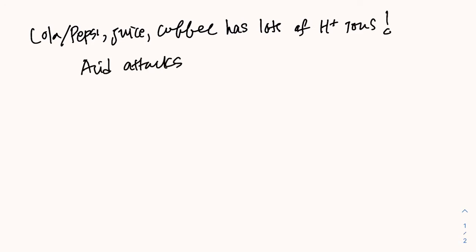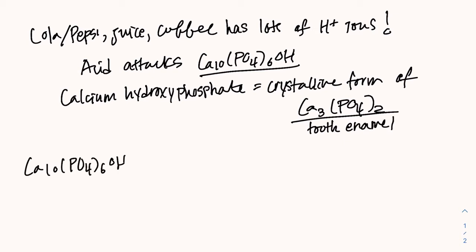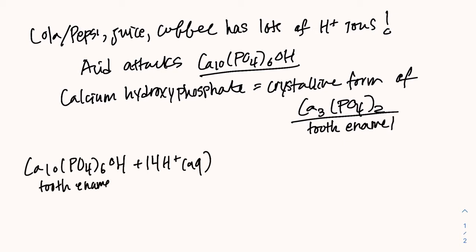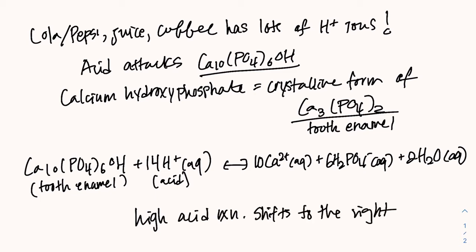Acid is known to attack calcium hydroxy phosphate — that is the crystalline form of calcium phosphate and tooth enamel. Here's the following chemical reaction: calcium hydroxy phosphate, the tooth enamel, reacts with acid resulting in the following products — calcium ions, phosphoric acid, and water. When acid levels in the mouth are high, for instance when we drink a lot of cola, the chemical reaction is forced to the right. This is known as a forward reaction. As a result, more calcium is dissolved.